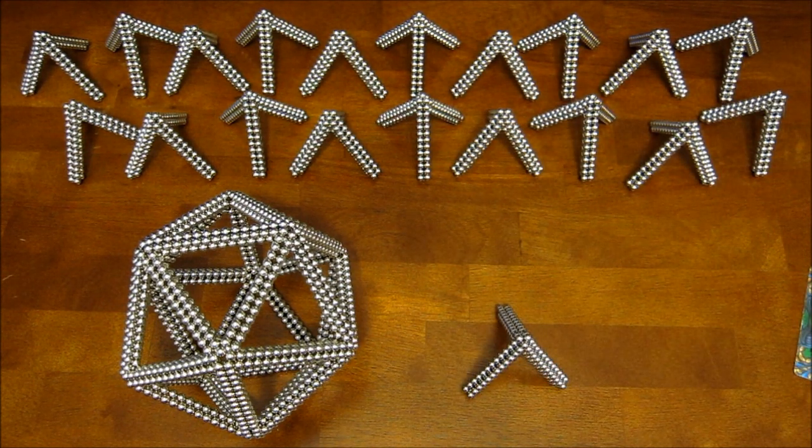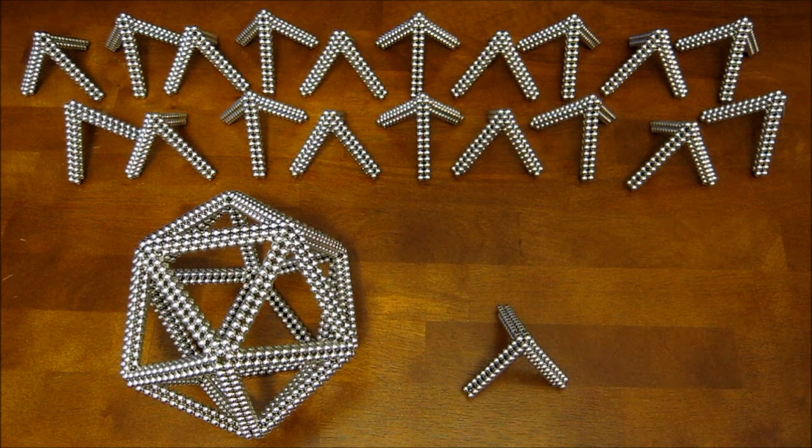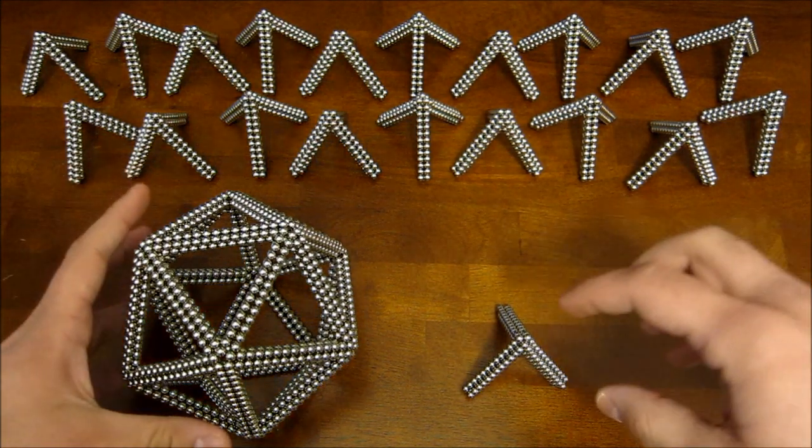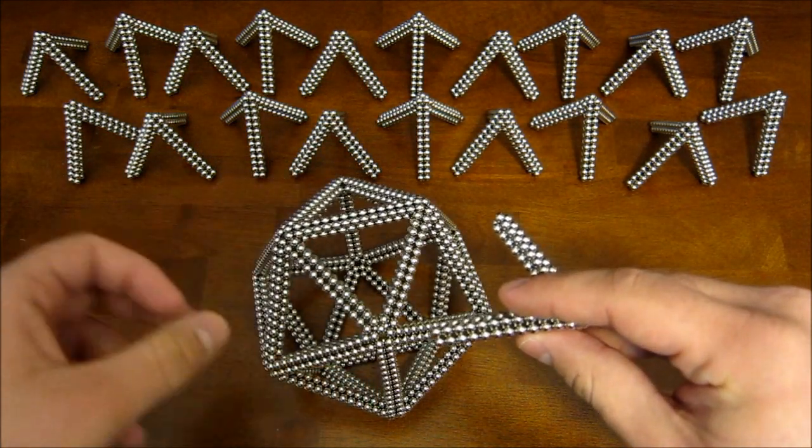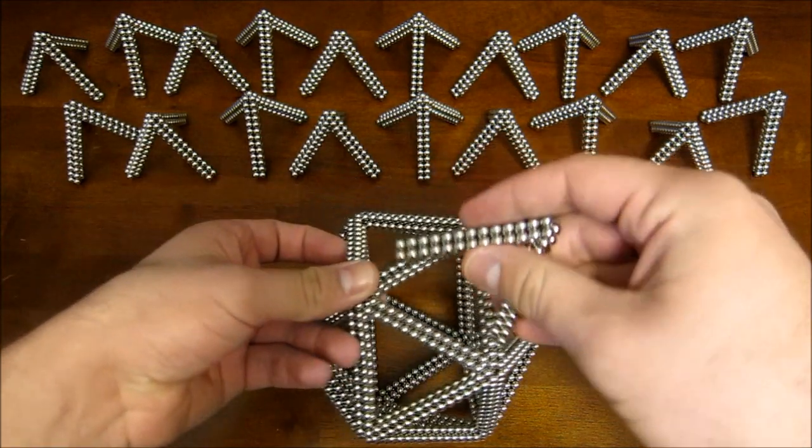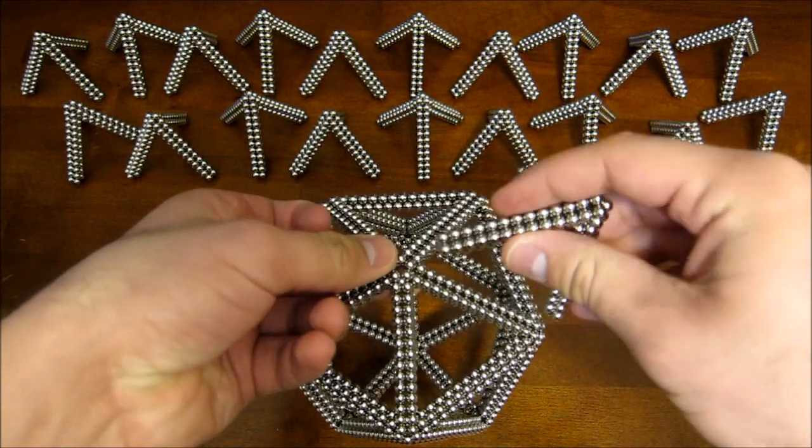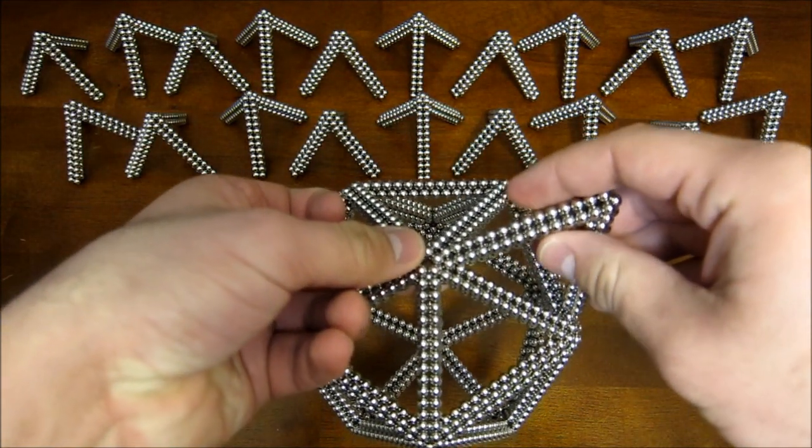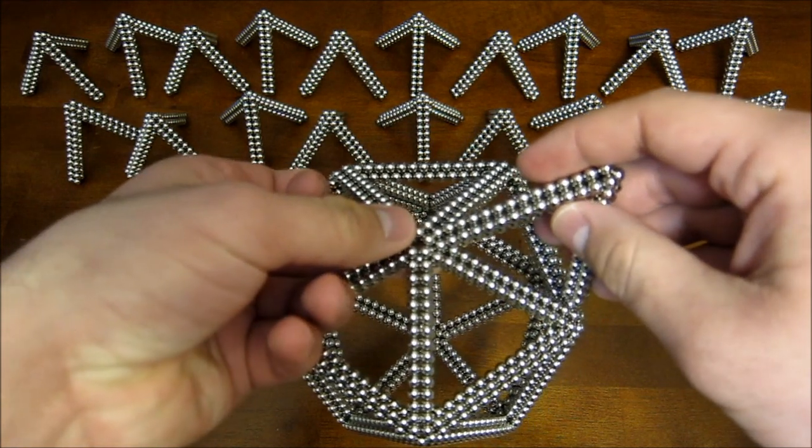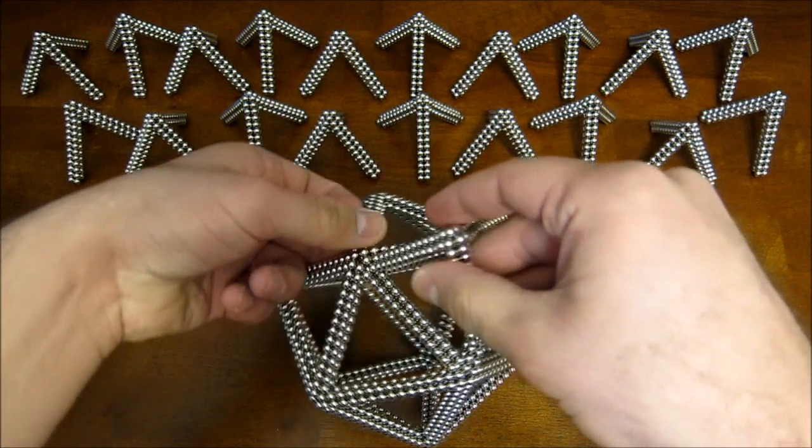So now you have that. And now you're going to want to add them on to the icosahedron. And these should just pop in to the corners like that.